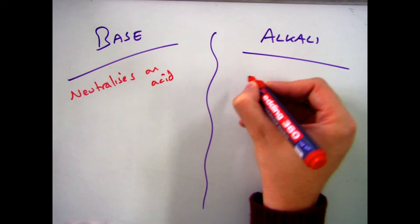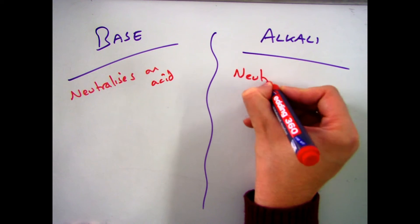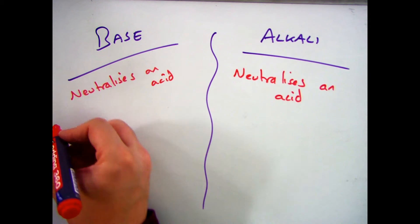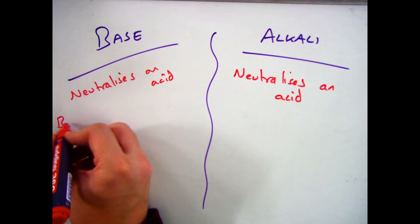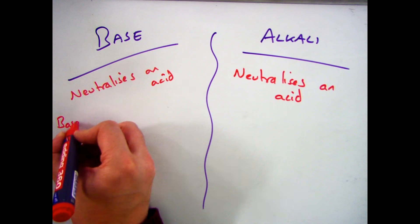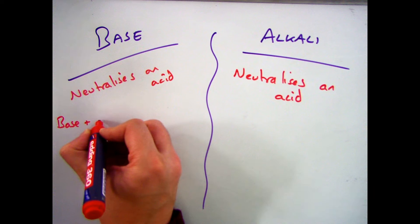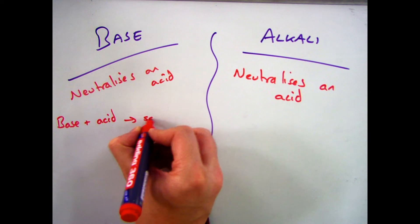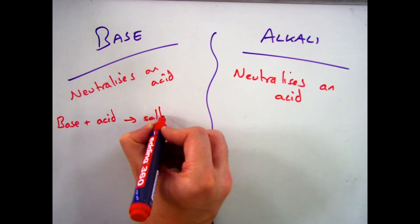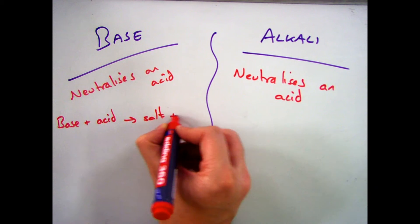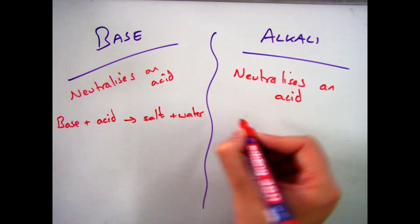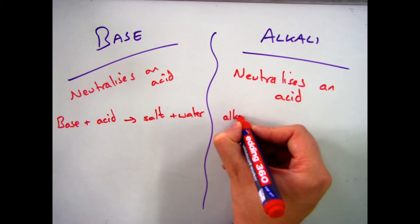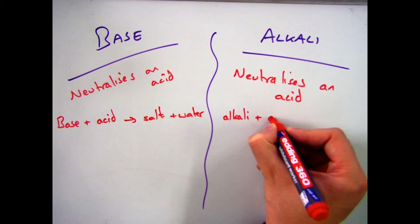The first thing to note is that a base is something that neutralizes an acid, and an alkali is also something that neutralizes an acid. So the general equation for a base is: base plus acid forms a salt and water. For an alkali, it's very similar: alkali plus acid forms a salt and water.